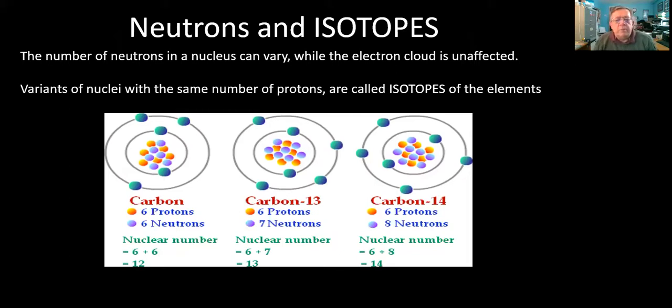Just to go over it again, here's three isotopes of carbon. The ordinary carbon with six of each, six protons and six neutrons, carbon-13 with an extra neutron, and carbon-14 with two extra neutrons. That's radioactive. That's the one they use for carbon dating.